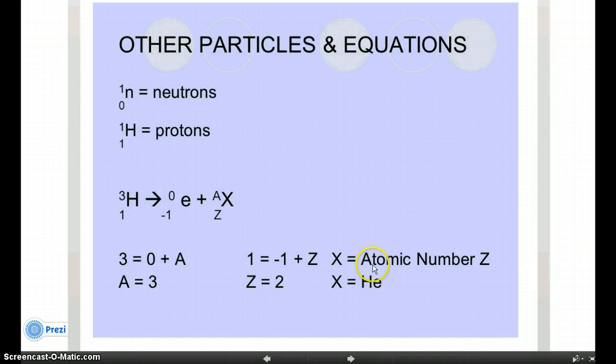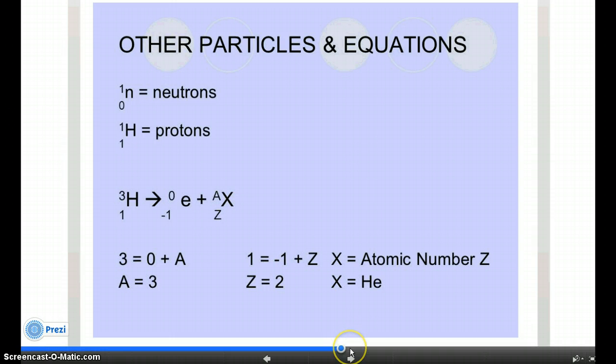Now to figure out what the symbol of this element is, we look for the atomic number. We look for this atomic number on the periodic table. So if you find element number 2, you'll find that it's helium. And so we use the symbol HE. So this would be 3 over 2 HE as our answer. You're going to get an opportunity to do some of these problems as practice.